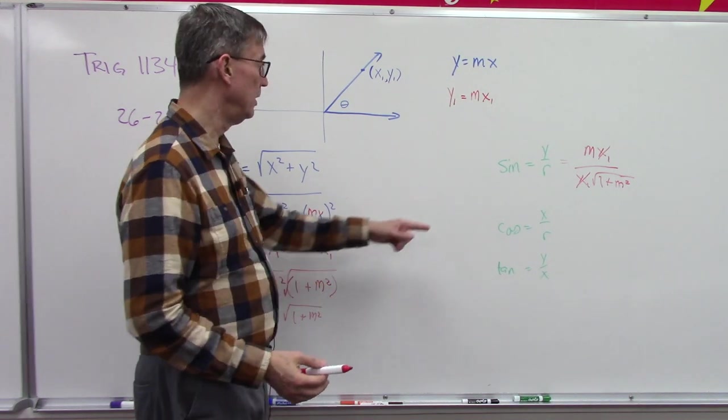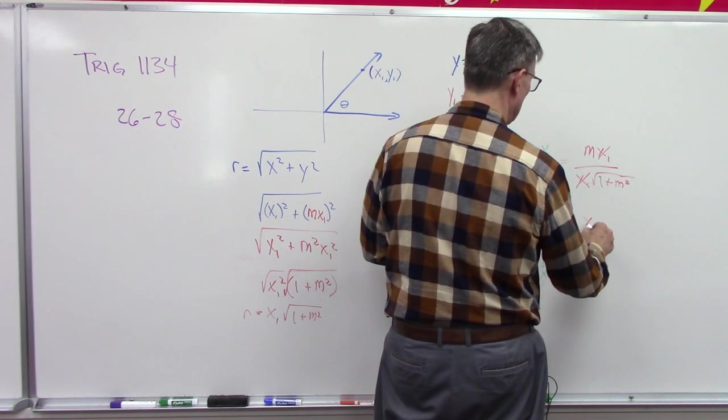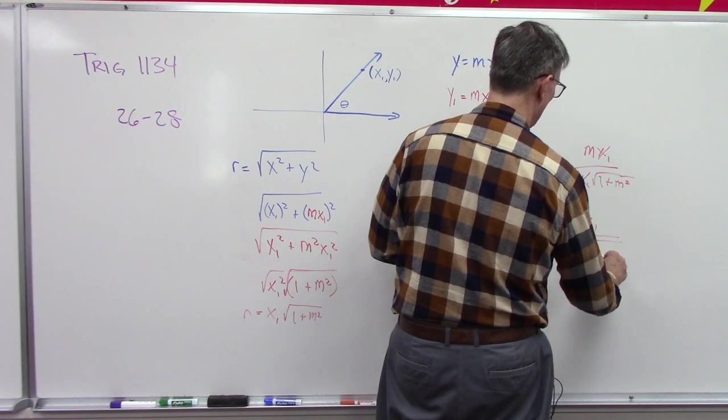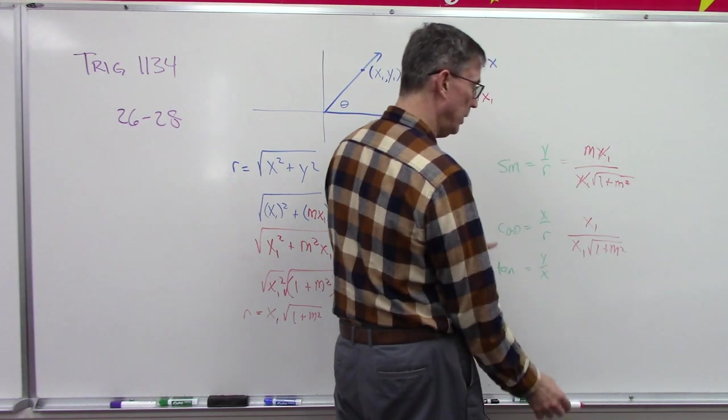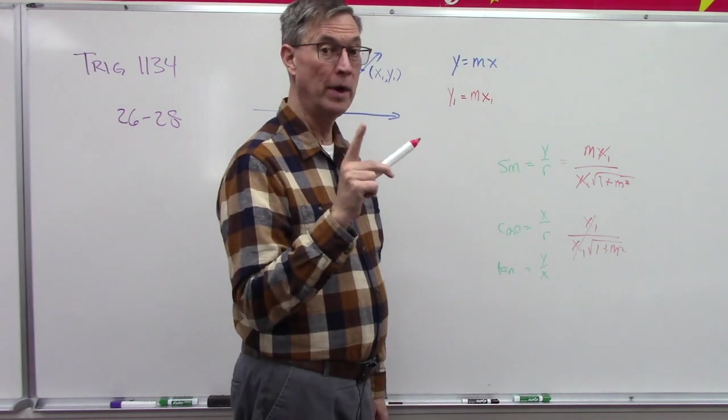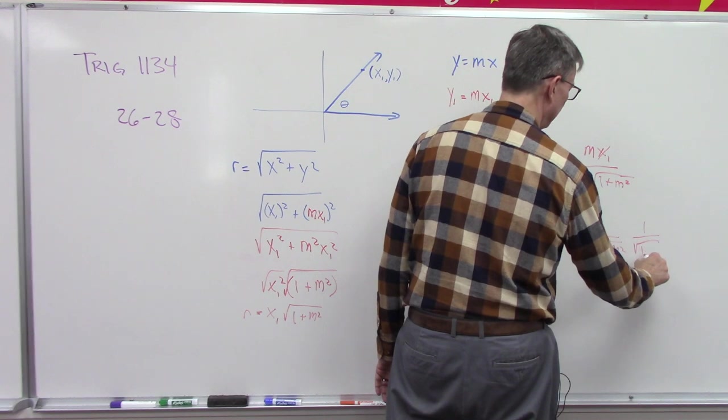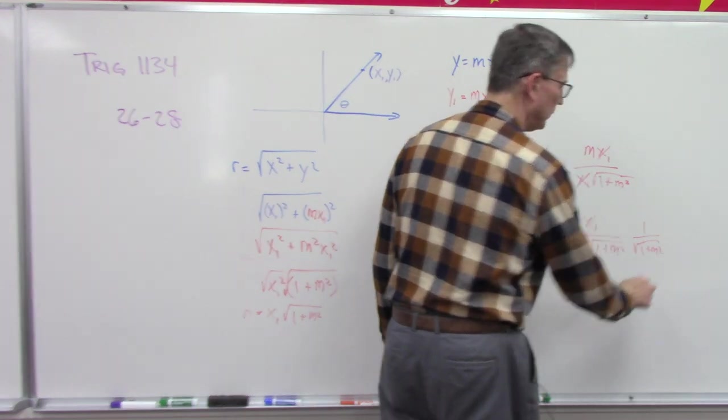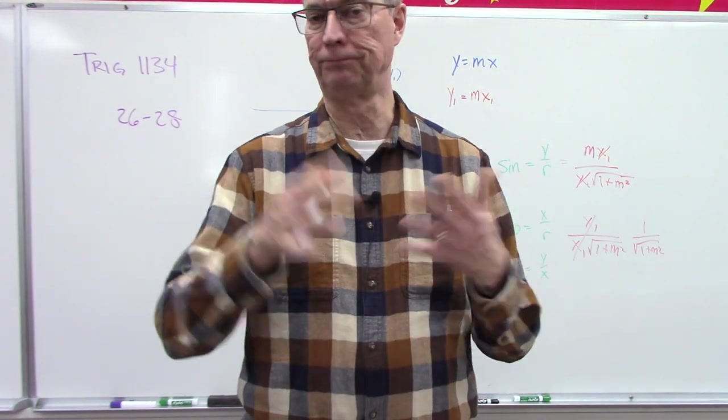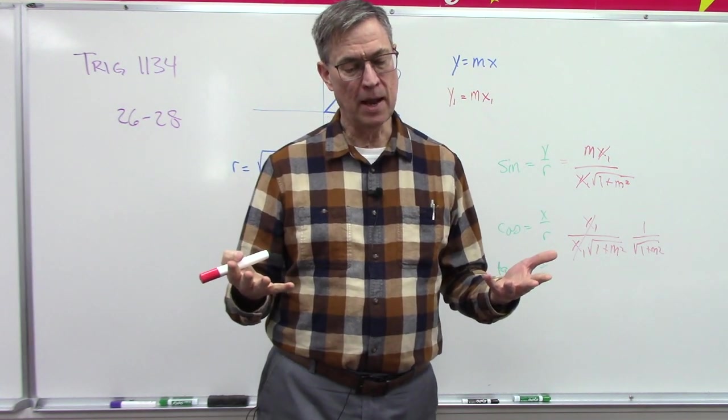Now we could do the same thing here for cosine. Cosine is just x₁ over x sub 1 square root of 1 plus m squared, and now that cancels that, but be careful, we have to keep a 1 on the top because that reminds us that this is in the denominator. And then you can see the same thing happening for tangent - x₁ cancels top and bottom and you're just left with m.